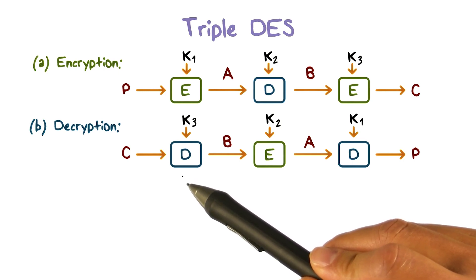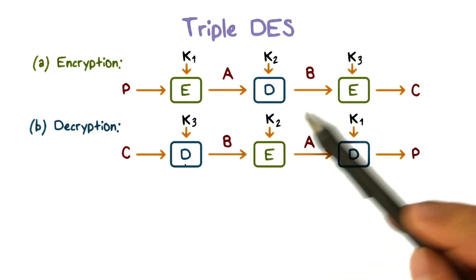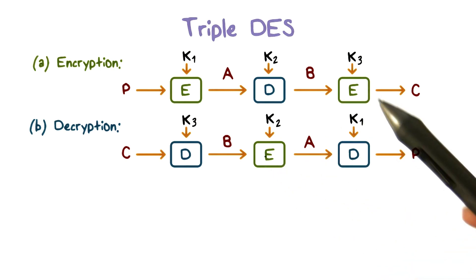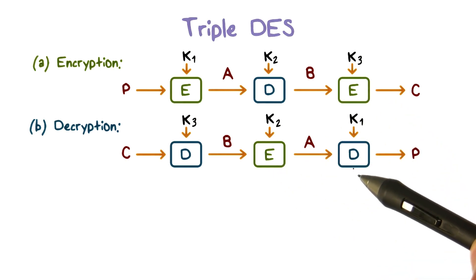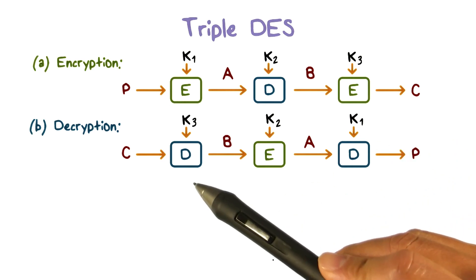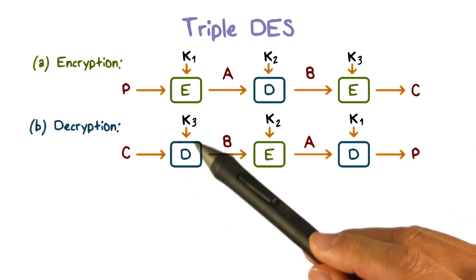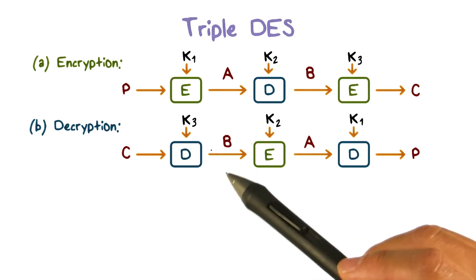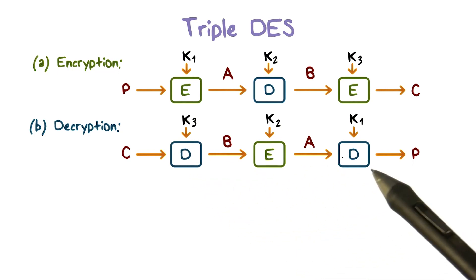And correspondingly, for decryption, this will mean to run the decryption process first, then the encryption process, then the decryption process again. And recall that with DES, the decryption process is actually the same as the encryption process, only that we apply the keys in the reverse order.